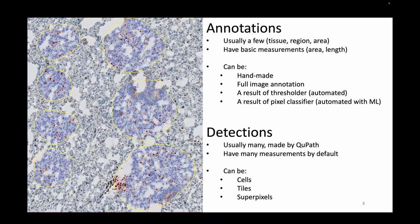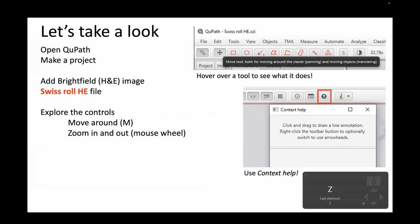We're going to start by hand-making a lot of annotations, but before we do that, let's open QPAD, make a fresh project, and add the H&E Swiss Roll H&E file to that new project. While you're interacting with QPAD, if you hover over a tool it will give you a helpful tooltip. There's also context help — that little question mark button — go ahead and click it to open a new window, and as you move over a tool or part of the interface, it gives you context help.